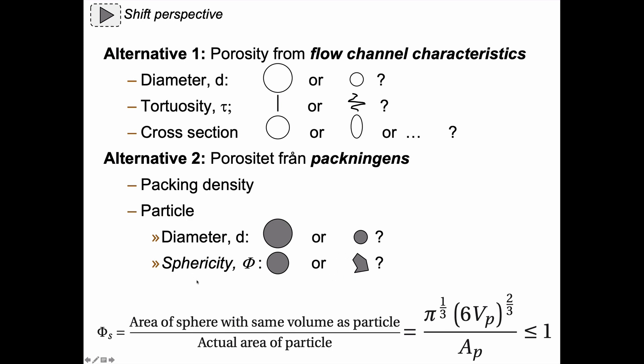And we will use here something called a sphericity, which is defined as the area of a sphere with the same volume as the particle divided by the actual area of the particle. And you have the formula here and the sphericity is always less or equal to one. So for a perfect sphere, the sphericity is one.